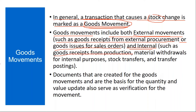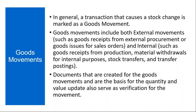Internal goods movements include goods receipts from production — when the production team manufactures a product and transfers it to the warehouse — and material withdrawal, where the warehouse team issues raw materials to production. There are also stock transfers between plants or storage locations, and transfer postings. We will discuss the difference between stock transfers and transfer postings in subsequent classes when we cover goods receipts, goods issues, and stock transfers in detail.